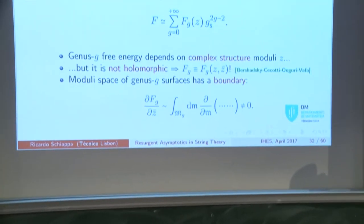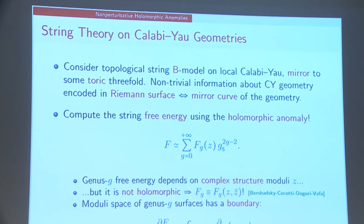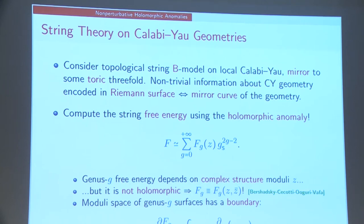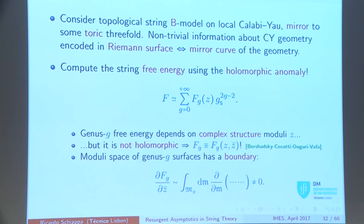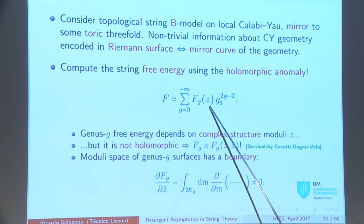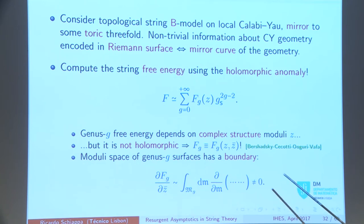The example I want to discuss is topological string theory in local P2. We'll be dealing with the B model on some local Calabi-Yau. In most cases this story applies, they mirror to some toric geometry such that the information is encoded in the mirror curve — by computing periods in the mirror curve, I compute most of the needed information. The free energy of the string theory looks like a genus expansion in the string coupling G_s with complex structure moduli.